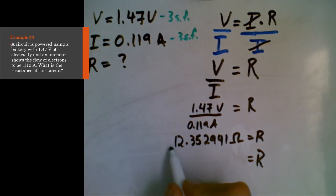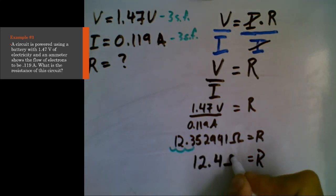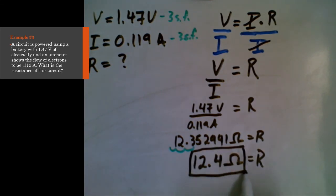And so we need to round this to three significant figures. So we're going to keep the one, the two, and the three. We're going to round off after that. So we get 12.4 ohms. And that is our final answer.